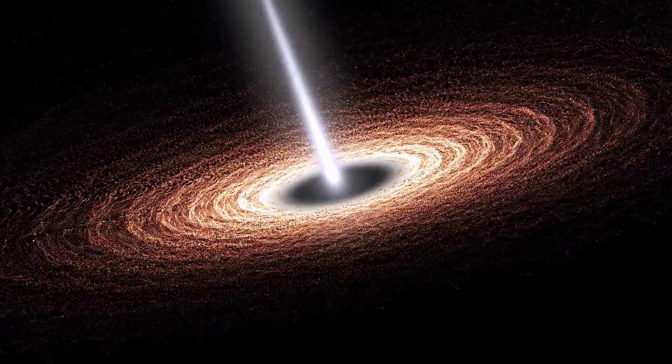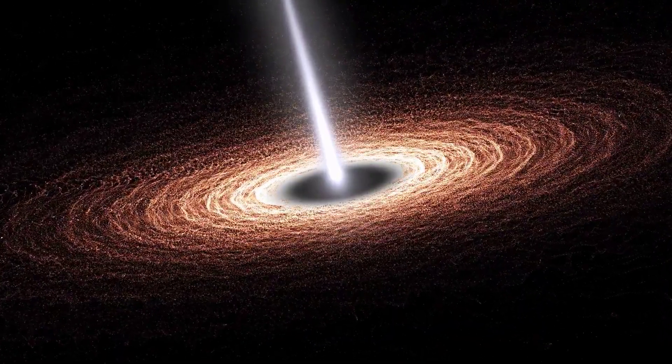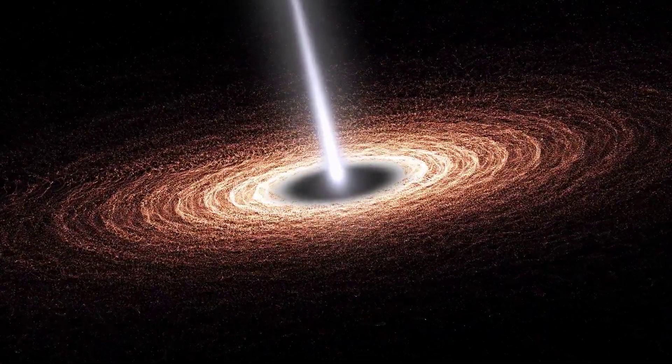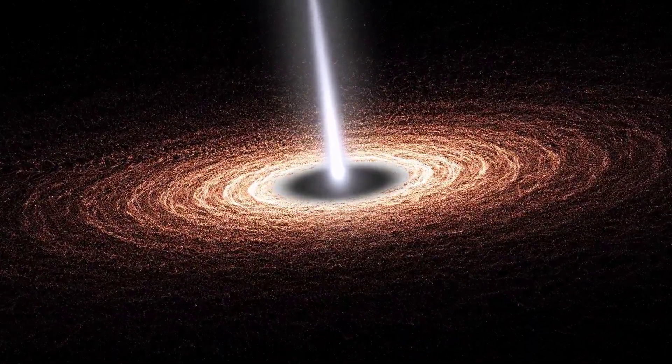Some black holes emit powerful jets of matter at speeds close to the speed of light, extending vast distances into space. These relativistic jets are generated by the interaction of magnetic fields with the accretion disk orbiting the black hole.